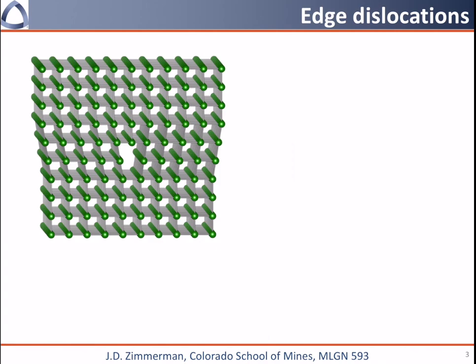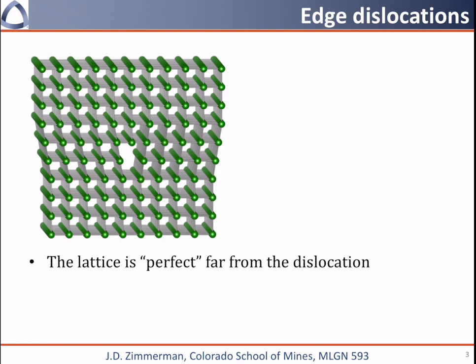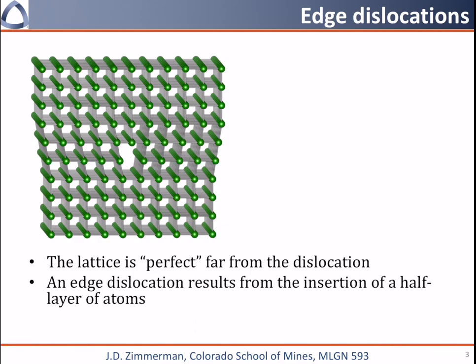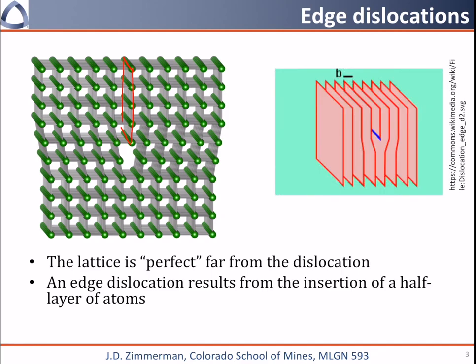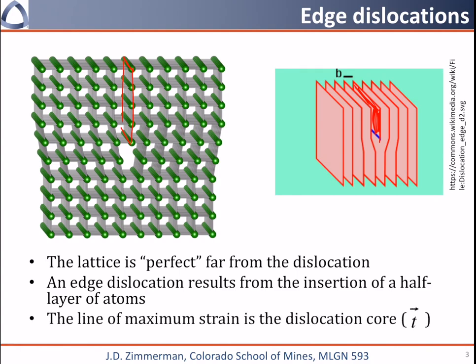Here I'm showing you an edge dislocation. Very far from the center — out towards the edges, top, and bottom — this crystal looks perfect. But what we've done is we have inserted essentially a half layer of atoms into this portion of the crystal. You can also see this in the image where we've added this extra half plane of atoms into the crystal. There is something called the dislocation core, which is the line that sees the maximum strain, and that's shown here in blue.